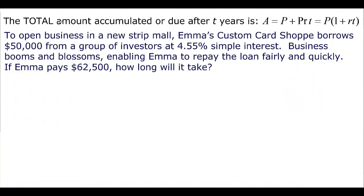Now we're going to talk about the total amount accumulated — that's A, the accumulated value. To find it, you take your principal and add the principal times rate times time, which is our interest. So it's principal plus interest. We can factor out P, leaving us with A is equal to P times the quantity 1 plus RT.